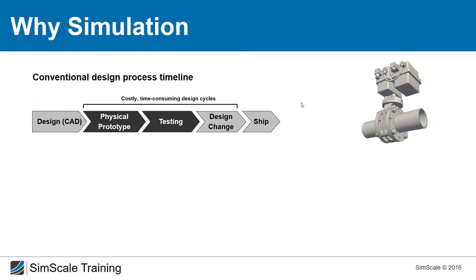Let's look at the general product design process and its timeline. Imagine you are working as an engineer in an aerospace company and your job is to design a security valve for hydraulics. In the old process without engineering simulation, you first do your CAD design of the whole valve — not just the valve body, but every seal, ball, and even the electronics — because you need a full physical prototype to test it.